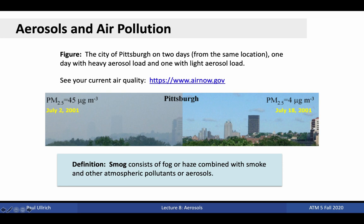Besides being responsible for ruining views, high aerosol loads are also associated with negative consequences for human health. Here we see the city of Pittsburgh on two days viewed from the same location. The left image shows the city under a relatively high aerosol load of 45 micrograms per cubic meter, while the right image shows a much lower load of four micrograms per cubic meter. These smog decks are normally formed because of stagnant air that is not well circulated, plus emissions from natural or anthropogenic sources. Smog itself is composed of the words smoke and fog, and refers to a haze layer typically consisting of atmospheric pollutants and aerosols.